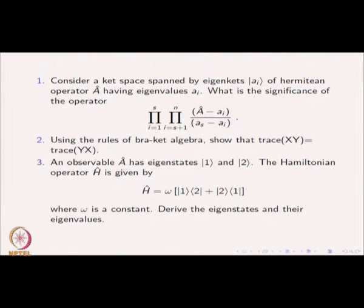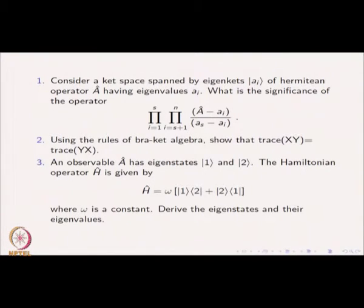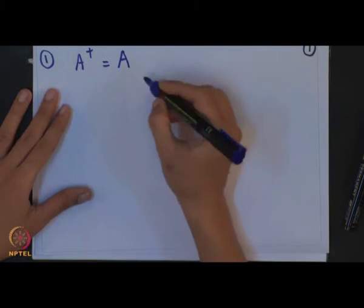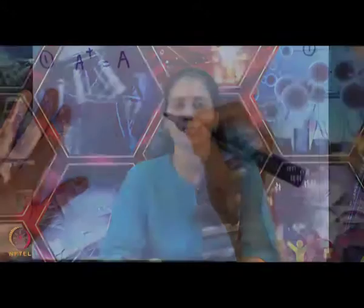The first problem involves a special operator, which I will explain after we solve it. You are given a ket space spanned by eigenstates |ai⟩ of a Hermitian operator A. Recall that a Hermitian operator satisfies A† = A — we have seen this before and we will use this property if required.